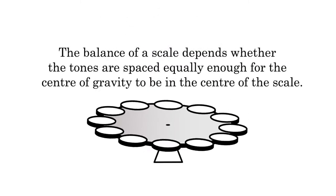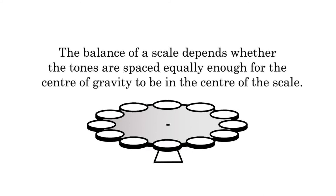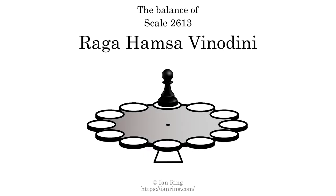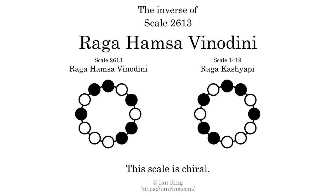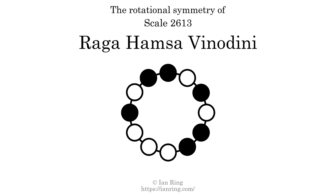The balance of a scale depends whether the tones are spaced equally enough for the center of gravity to be in the center of the scale. This scale is not balanced. The inverse of a scale is a mirror image — it is what you get when the sequence of intervals is reversed. The inverse of this scale is scale 1419, also known as Raga Kashyapi. This scale is chiral; it cannot transform into its inverse by rotational transformation. This scale has no rotational symmetry. For more detail, visit ianring.com/musictheory/scales/2613.